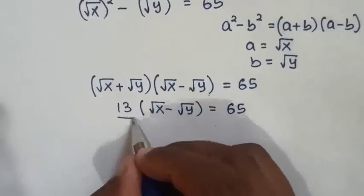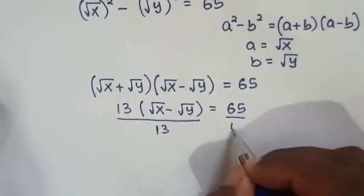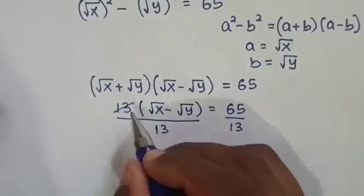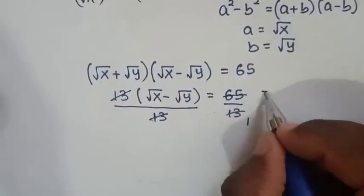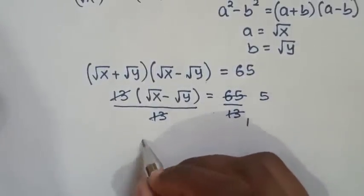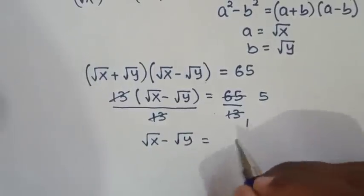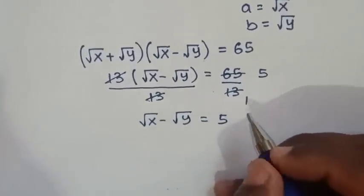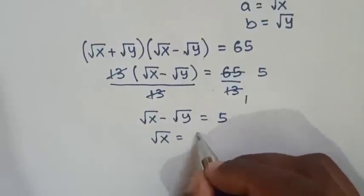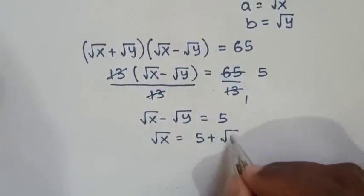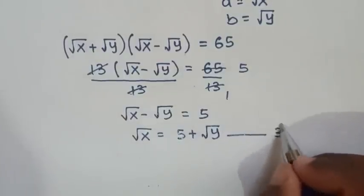In the next step, we divide both sides by 13. The 13s cancel, and 65 divided by 13 simplifies to 5. So √x minus √y equals 5. We then rearrange to isolate √x: √x equals 5 plus √y. We call this equation 3.